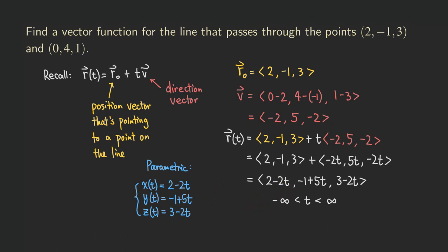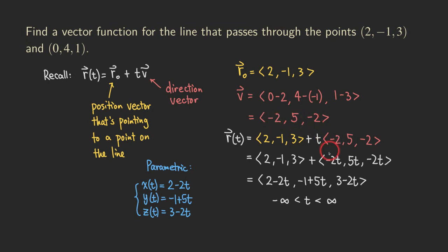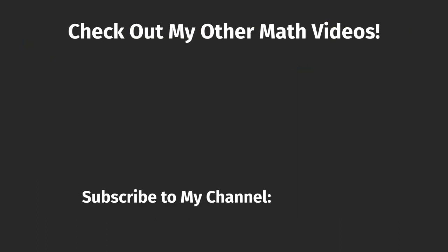So that's it. Just remember two things we need to find: one is the position vector pointing to a point on the line, and the other is the direction vector. Sometimes we need to adjust the direction we want to trace the line. Here, since we have no extra conditions, you can use either point subtracted from the other. Using the second point minus the first gives ⟨negative 2, 5, negative 2⟩; using the first minus the second would give the opposite direction: ⟨2, negative 5, 2⟩.